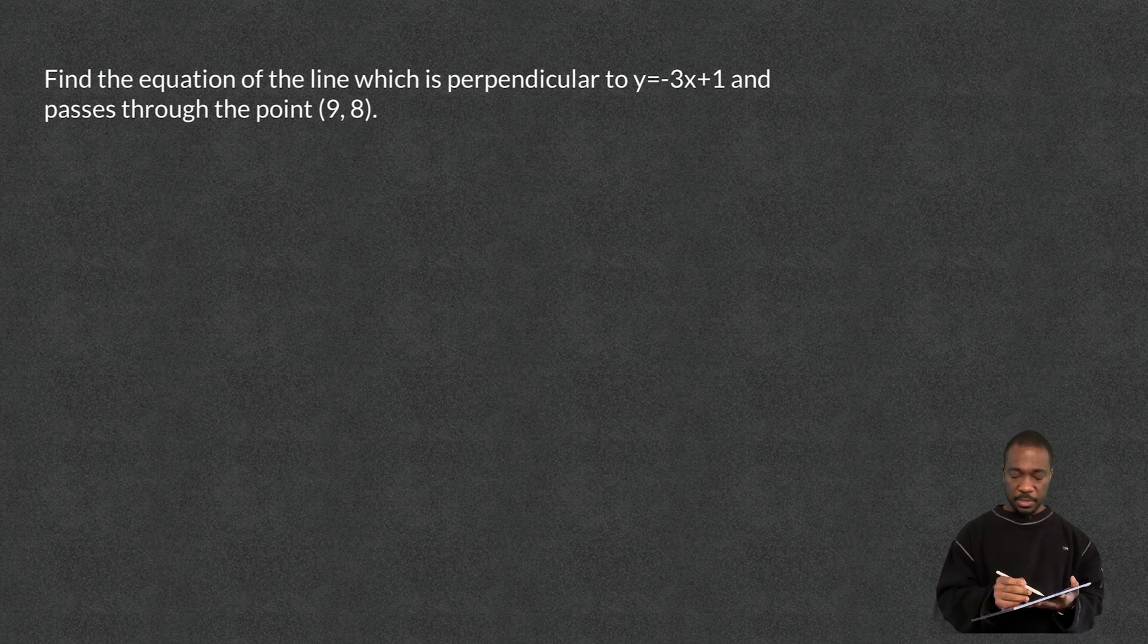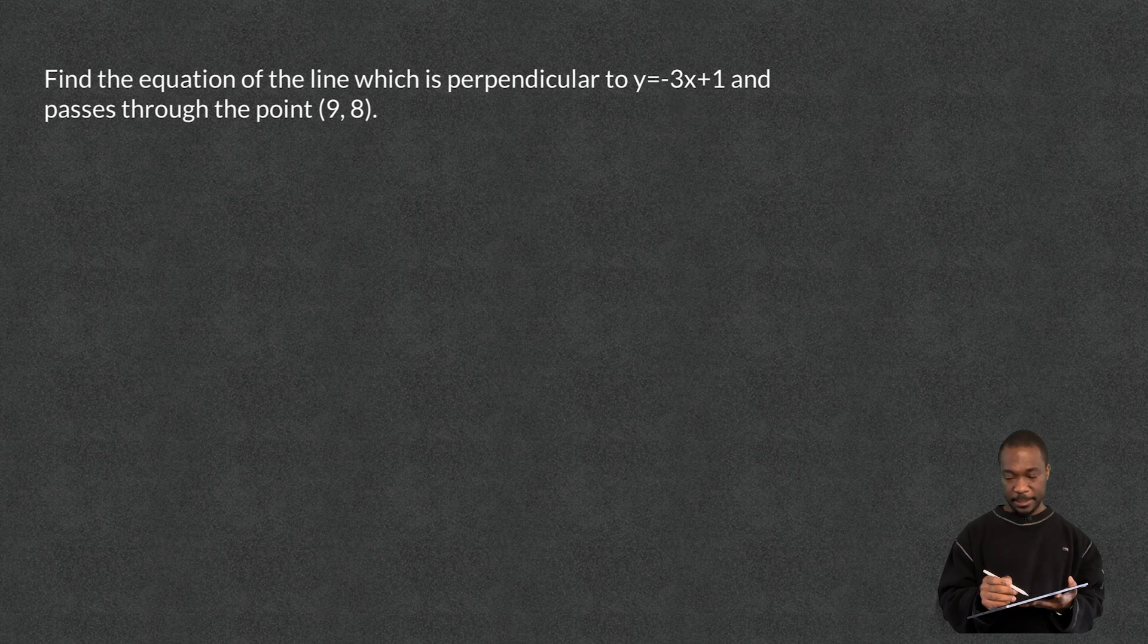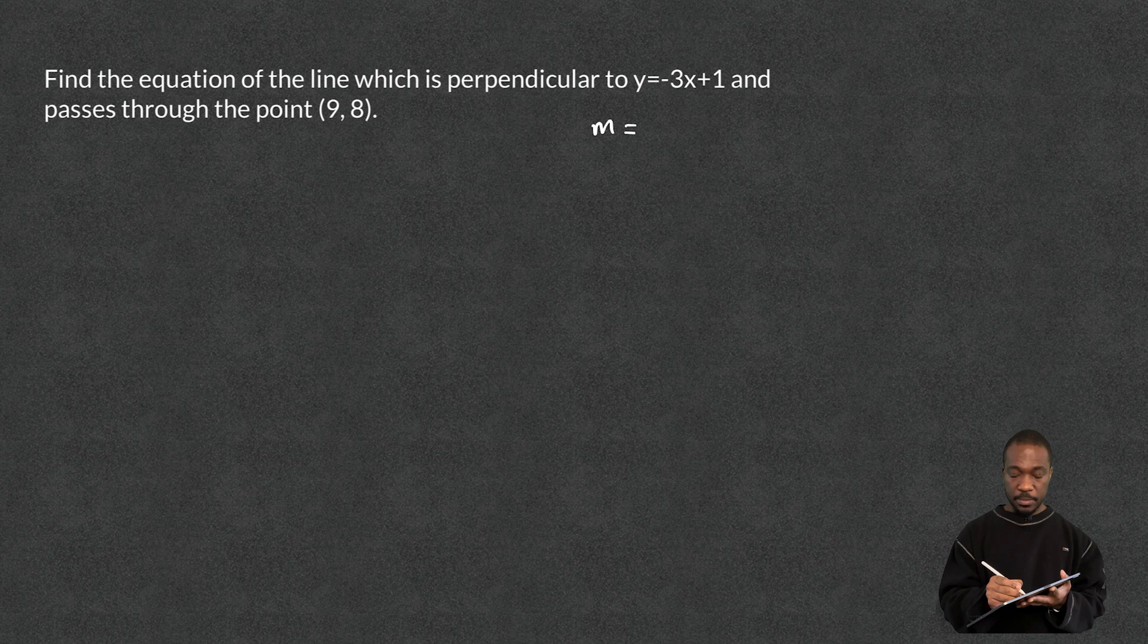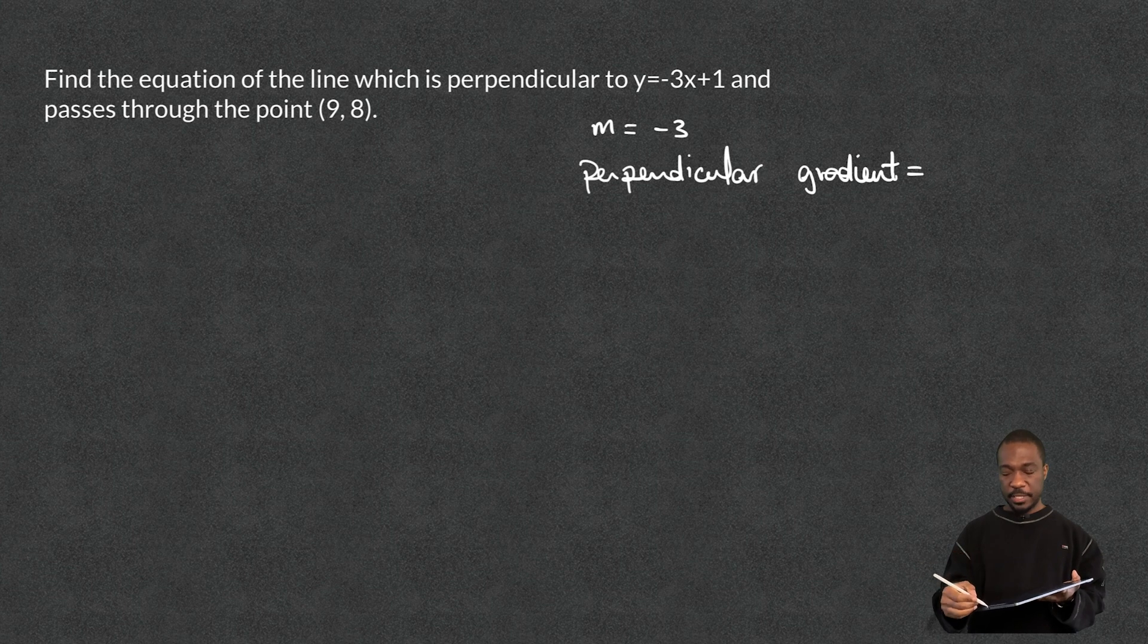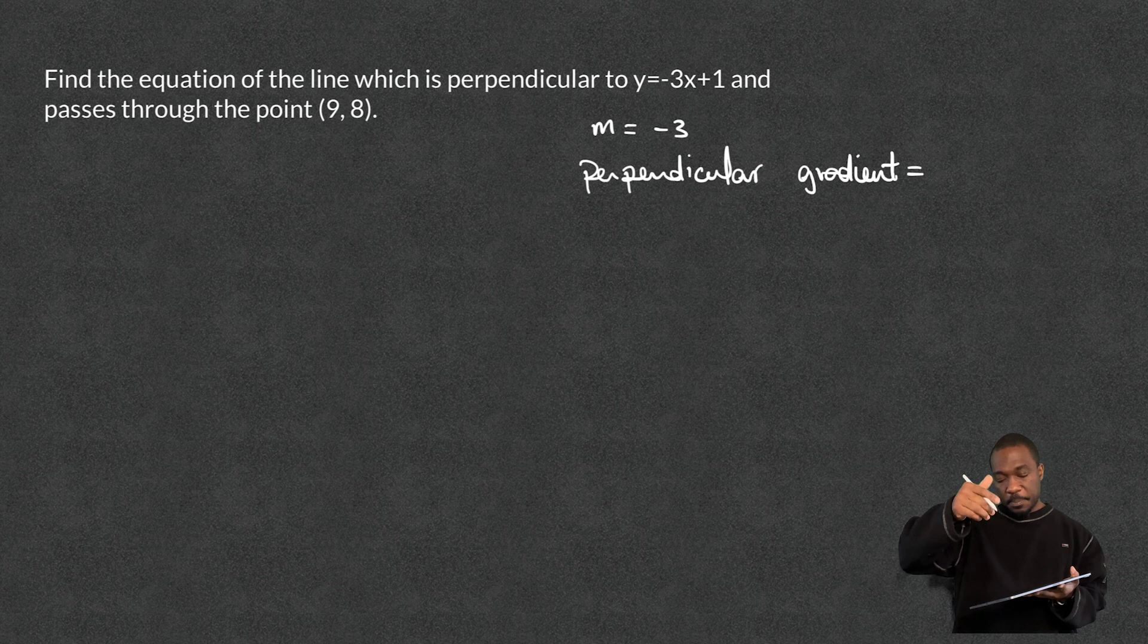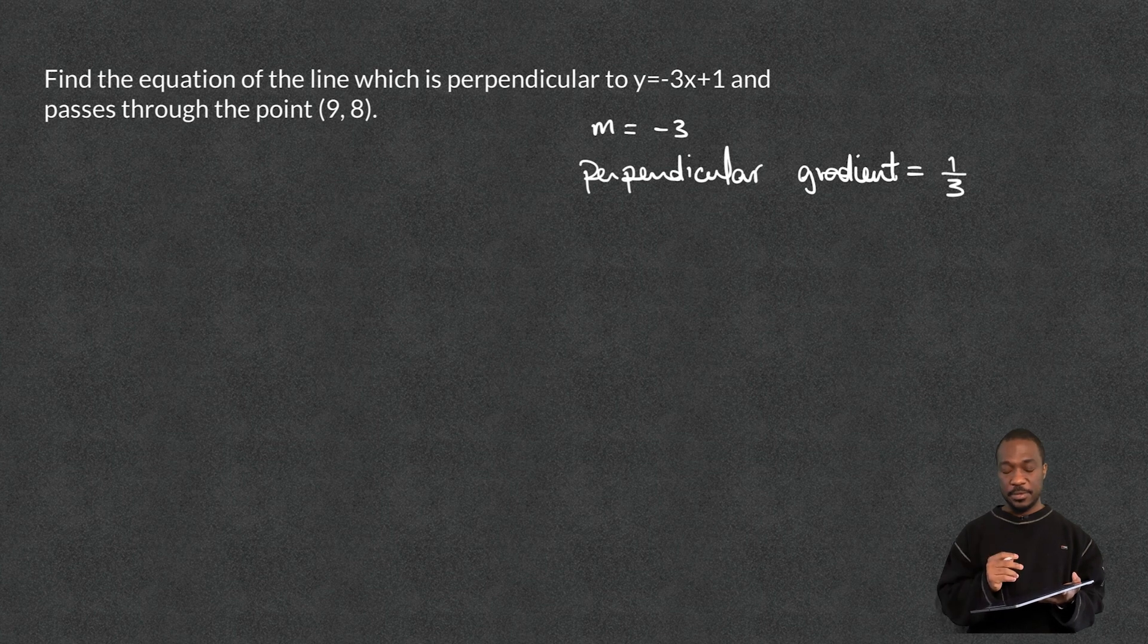Now the minute you see the word perpendicular, find the gradient straight away. So the gradient m is equal to minus 3, which means that the perpendicular gradient will equal the negative reciprocal. So what I tend to do is change the sign first, so it's no longer negative, it's going to be positive, and then reciprocate that 3, it becomes 1 over 3. That's my perpendicular gradient. That's what I'm going to use.